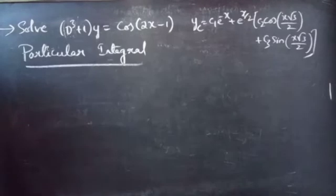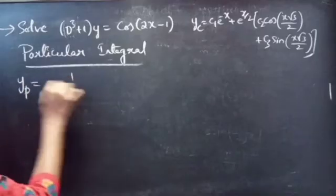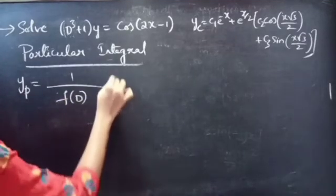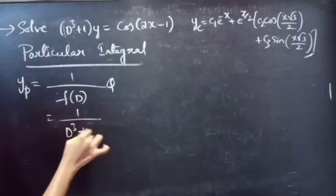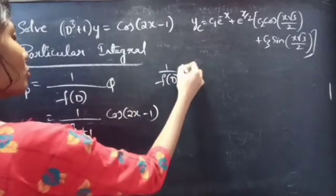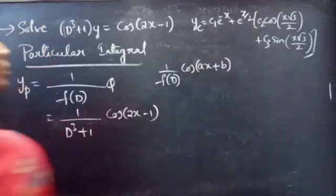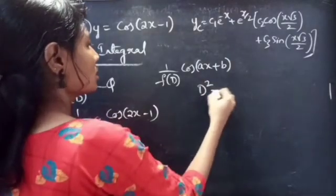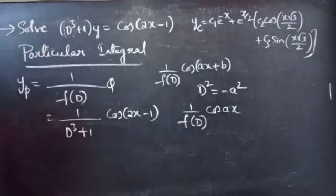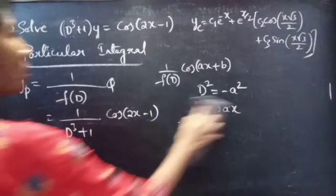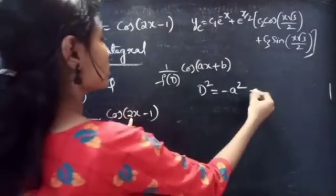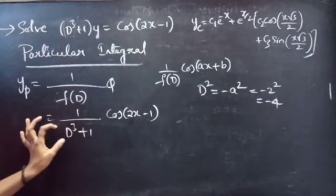Now let's find the particular integral. The particular integral is given by yp = (1/f(D))·Q = 1/(D³+1) · (cos2x - 1). This is of the form 1/f(D)·cos(ax + b). We use the rule of replacing D² by -a²; for a = 2, D² = -4. We write the denominator as D²·D + 1, then replace D² by -4 to get -4D + 1.